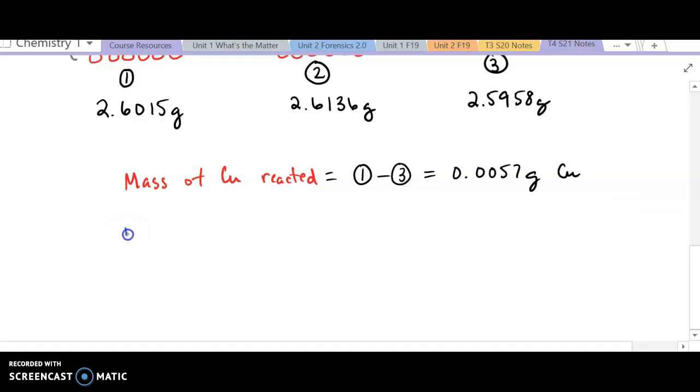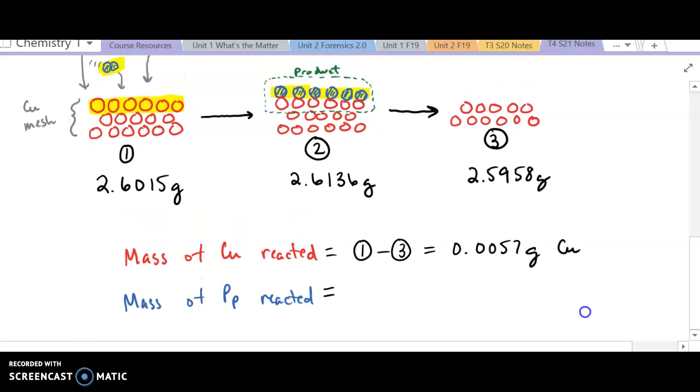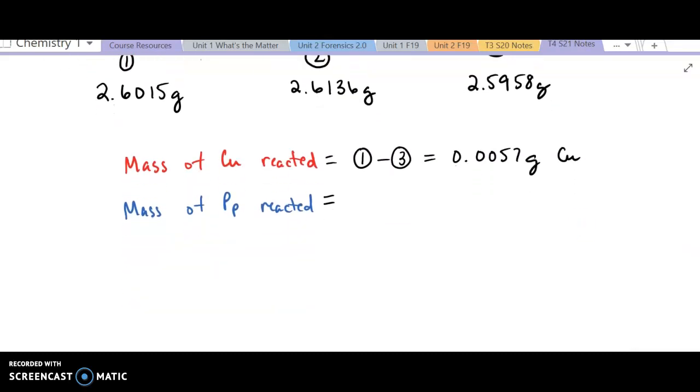Now, the second piece we need to think about is what mass of porphyrium atoms reacted. Now, in that case, we look at the data. We're only going to be concerned with figuring out the mass of these atoms that I've shown here in blue. In that case, what we're going to do is subtract the second column of data from our first. And in that case, we get a mass of 0.0121 grams of porphyrium.